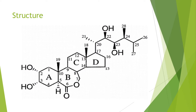On carbon 24, there can be different substituents. This means that the brassinosteroids can be C27, C28, or C29 — meaning they have 27, 28, or 29 carbons. The most common of these is the C28 group, which includes brassinolide as shown here, and these contain most of the bioactive brassinosteroids.